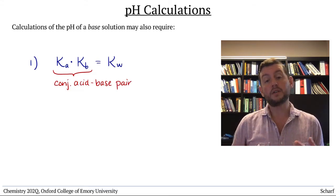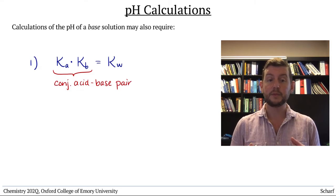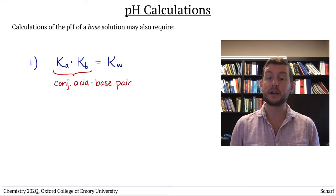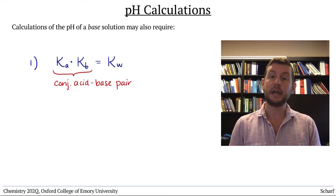So even if you aren't given the Kb or pKb of the base you're interested in, you may be able to find the Ka or pKa of its conjugate acid, because pKas are much more commonly tabulated than pKbs.